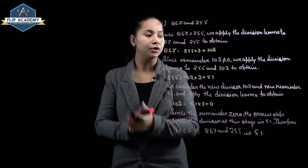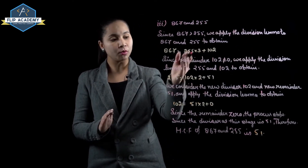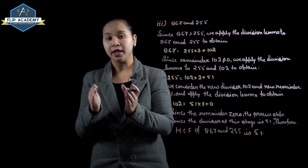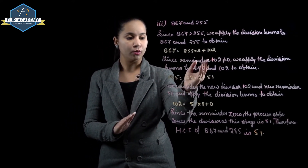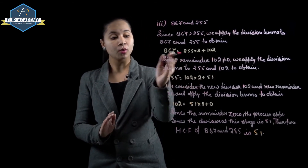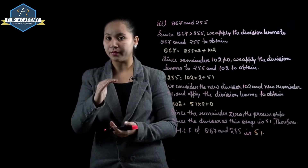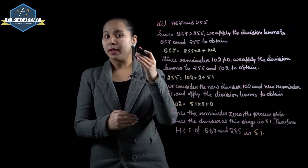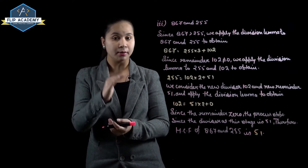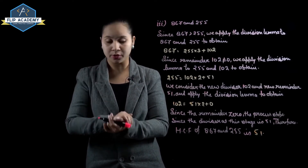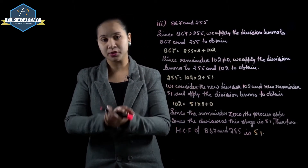Since remainder 102 is not equal to 0, we apply the division lemma to 255 and 102: 255 = 102 × 2 + 51. Here 255 is the dividend, 102 is the divisor, 2 is the quotient, and 51 is the remainder. Again the remainder is not 0, so we continue: 102 = 51 × 2 + 0. Now the remainder is 0, so the process stops.